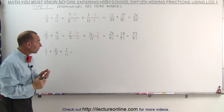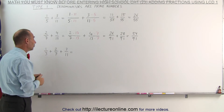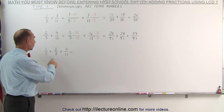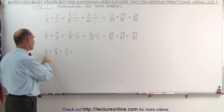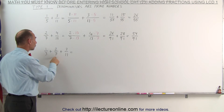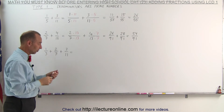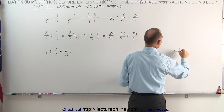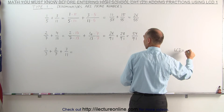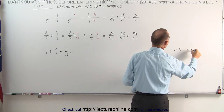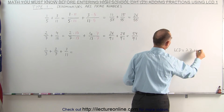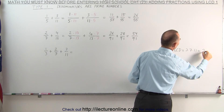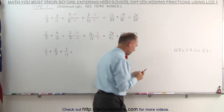On the third exercise, we now have three fractions, but the methodology is very similar. Again, the lowest common denominator is simply the product of all three denominators. The lowest common denominator is equal to 3 times 7 times 11, which is equal to 21 times 11, which is 231.